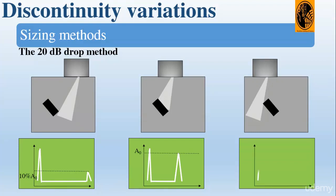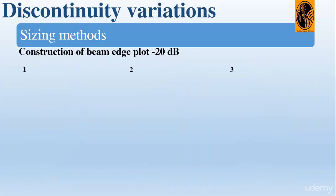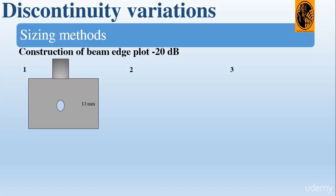Now let's see the beam construction at 20 dB. First step: find the hole at a depth of 13 mm with a zero degree probe, then maximize the signal by moving the probe until we get the highest signal from the hole. Turn the signal to full screen height using the gain function, then mark the position of the middle of the probe on the block.